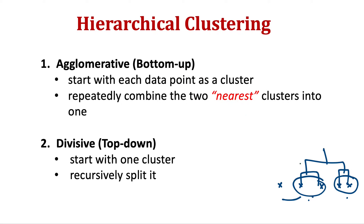There are two approaches. The first is bottom-up, or agglomerative clustering, where you start with each data point as its own cluster and repeatedly find the two nearest clusters and combine them into one. The second is divisive, or top-down, where you start with all points in a single cluster and recursively split it. Agglomerative clustering is more popular and will be the main focus of this video.